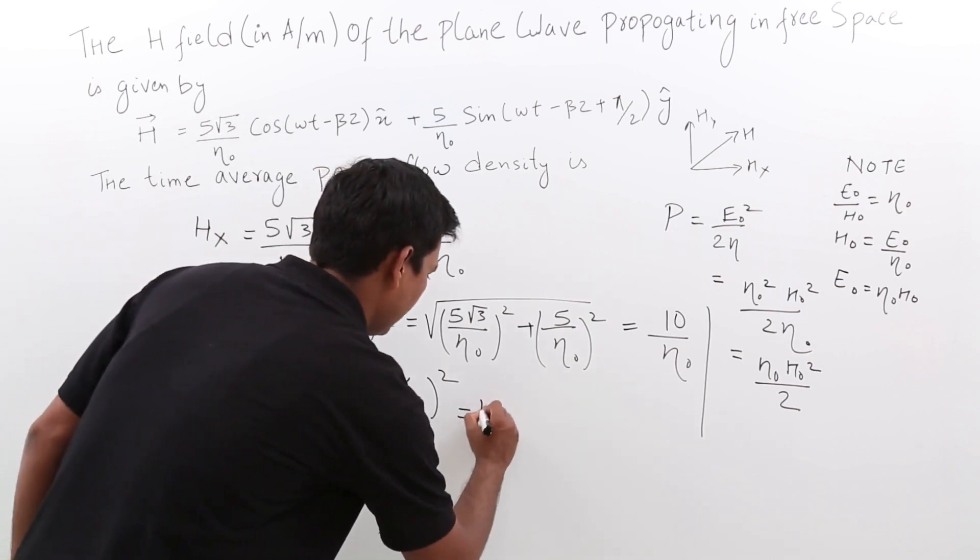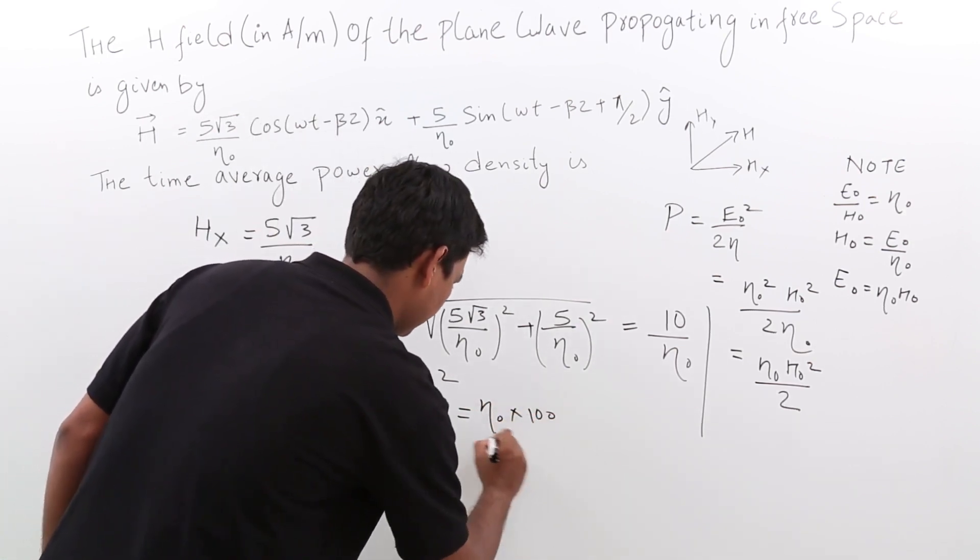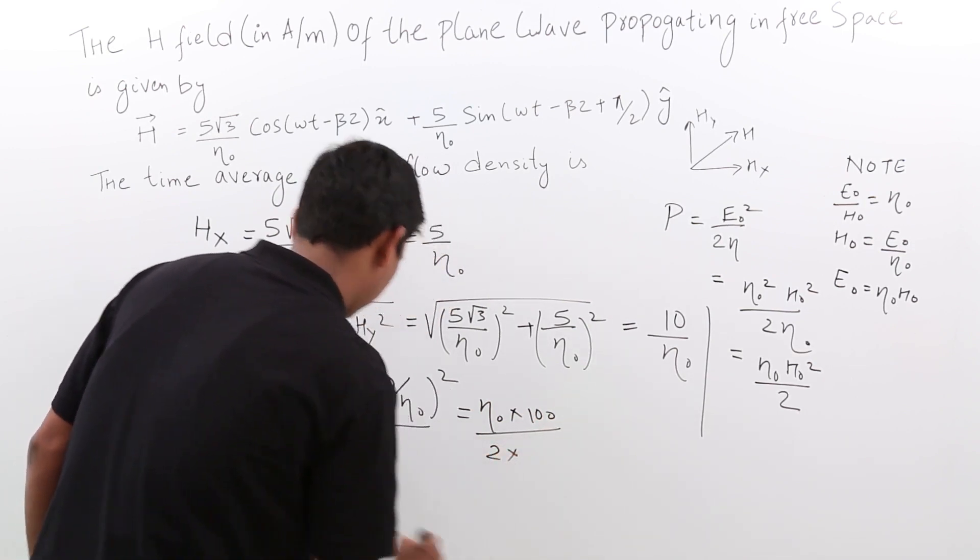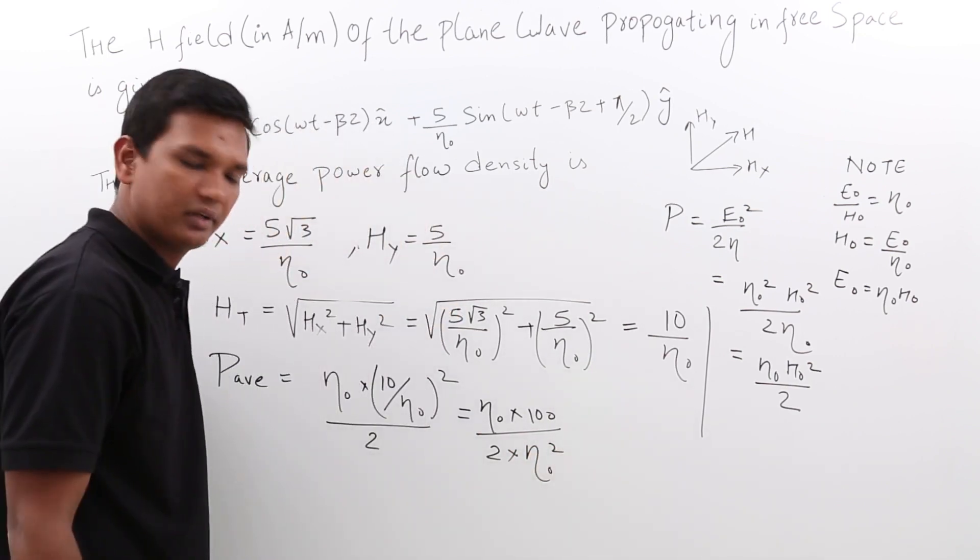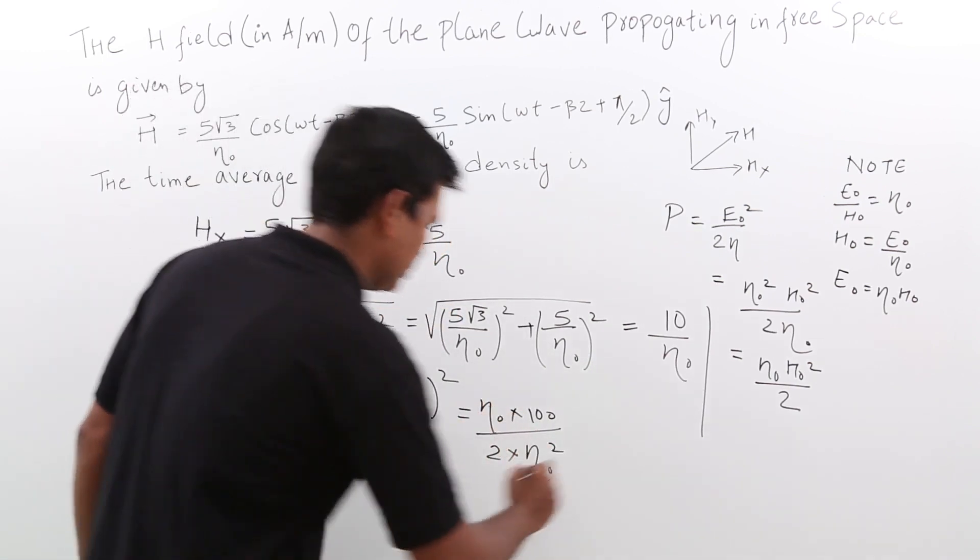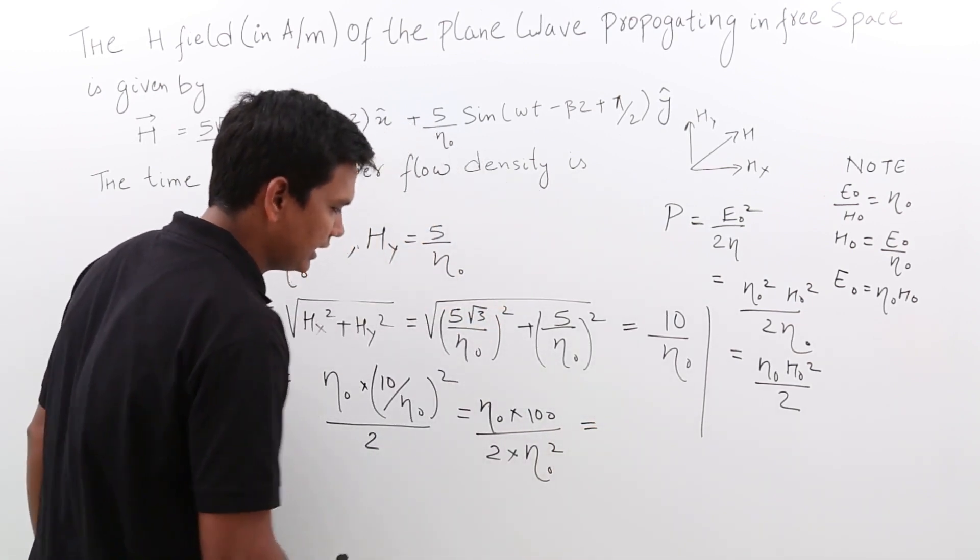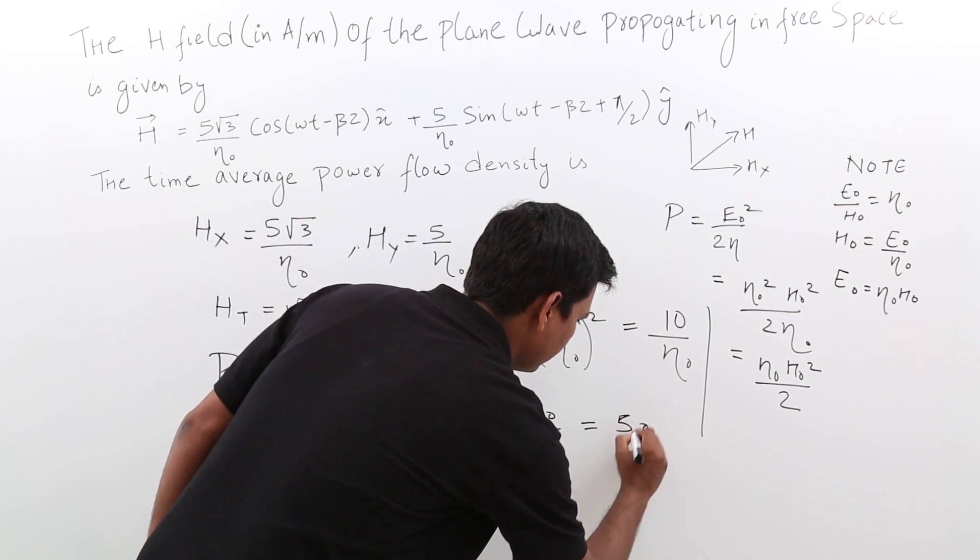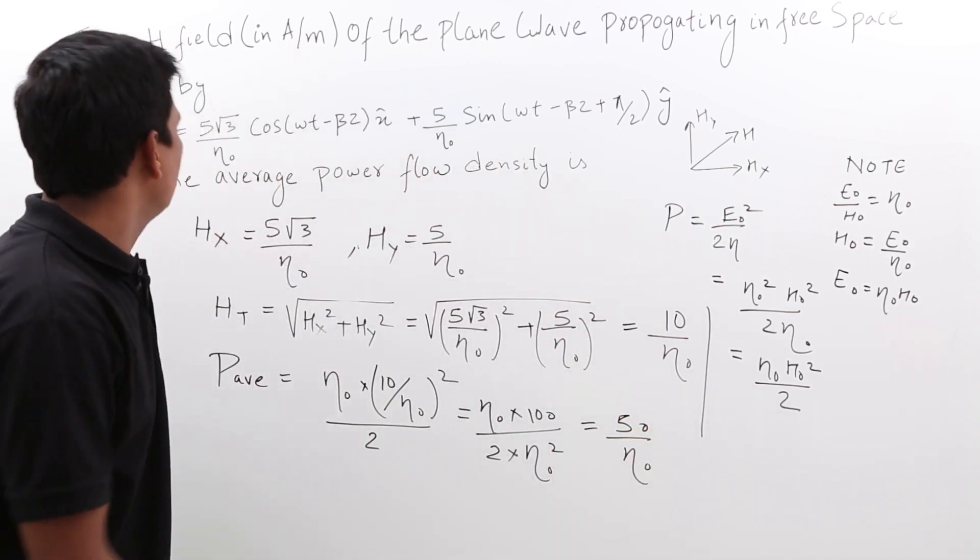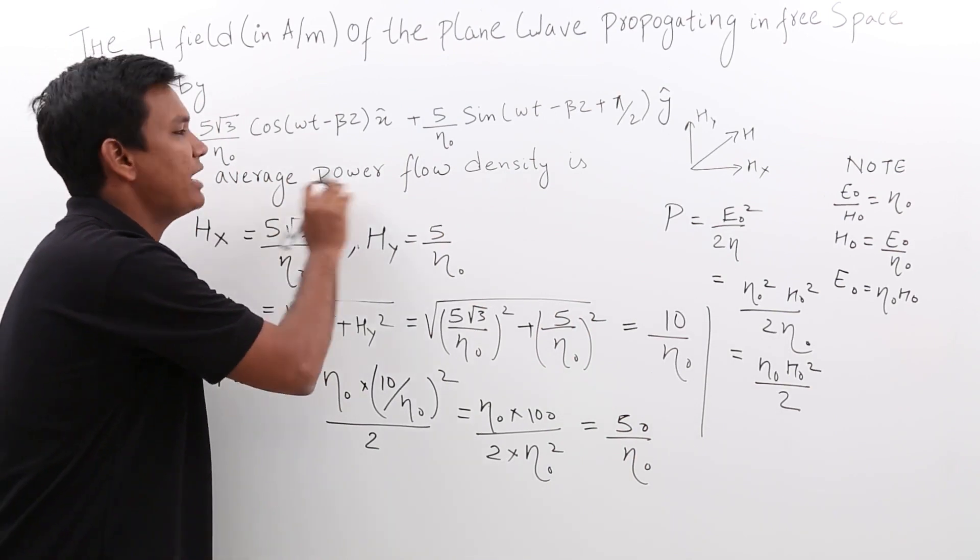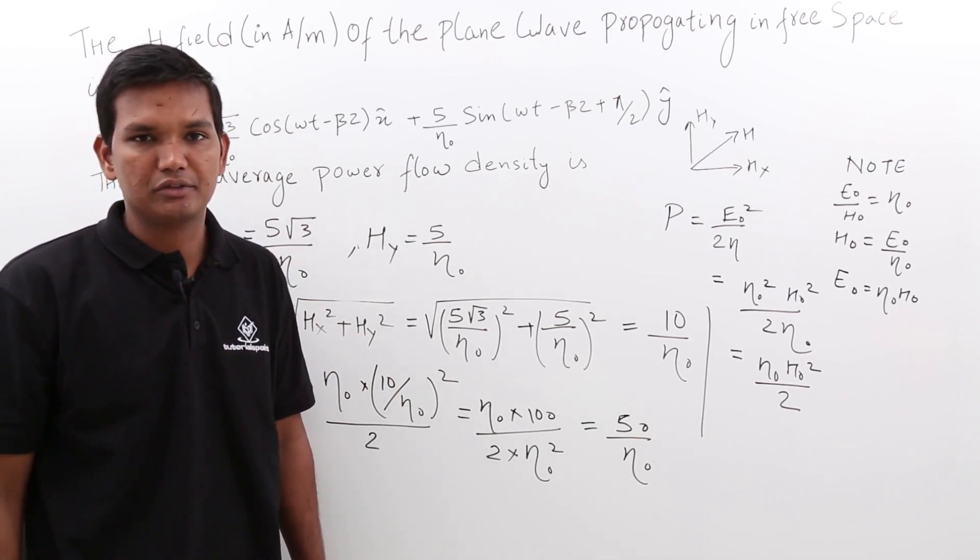If I simplify this, what I will get? This will be N naught, N naught square. This square and this N naught will cancel. So what will be left is 50 by N naught. So we have been able to find the time average power density for this problem. We will see more in the next videos.